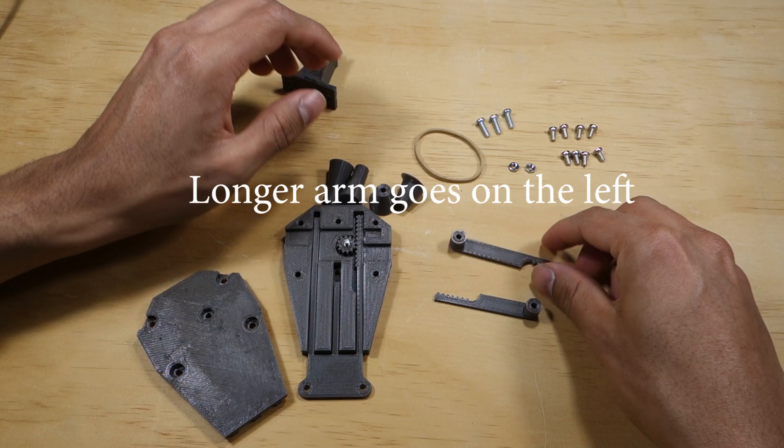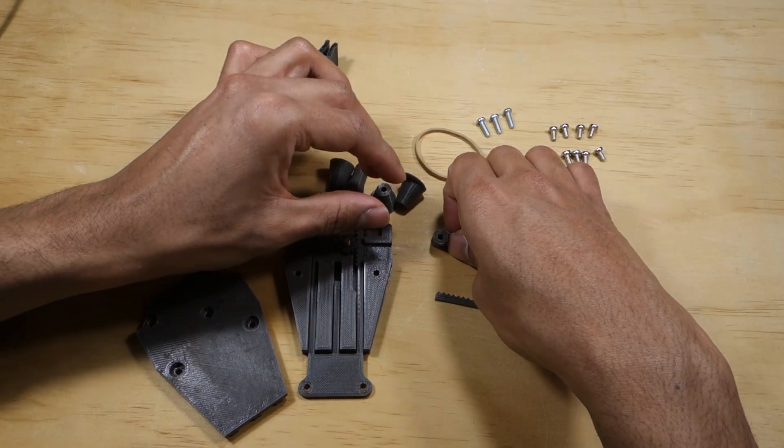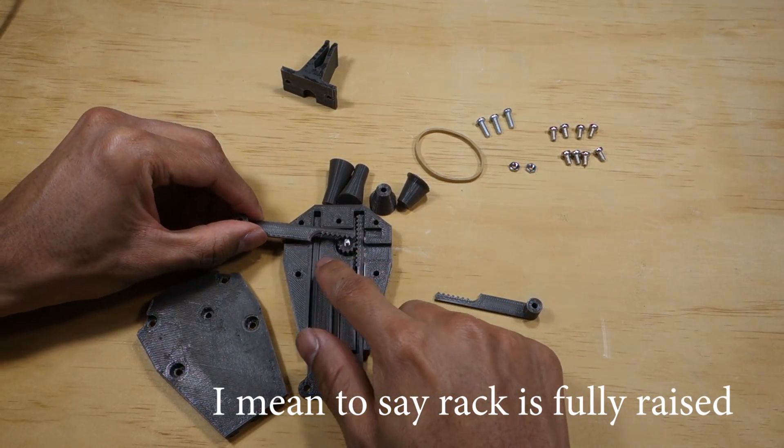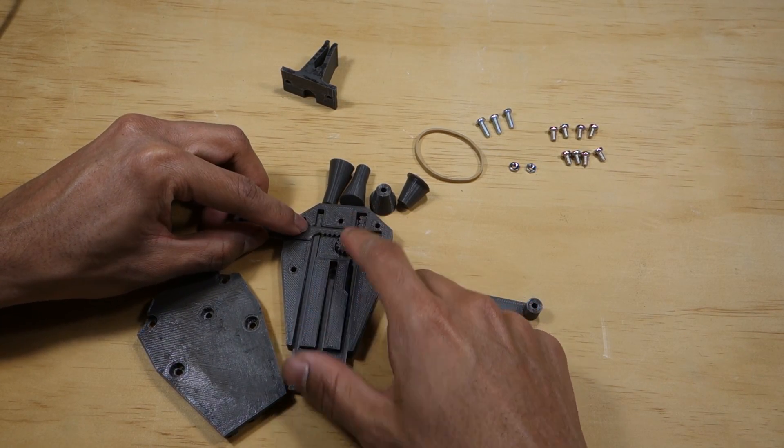Take the left and right arms and put them on the base making sure to align them with the gear. When the gear is fully raised the arms should be as far out as they can go.